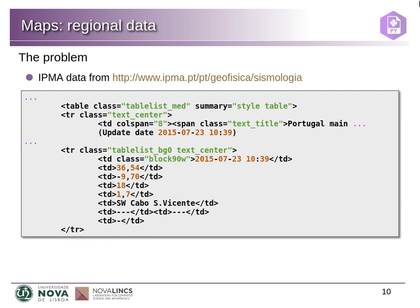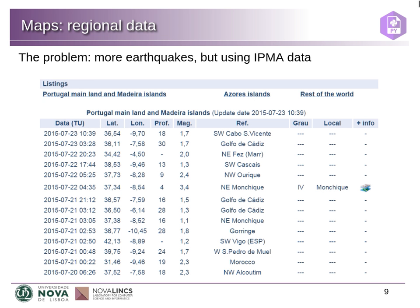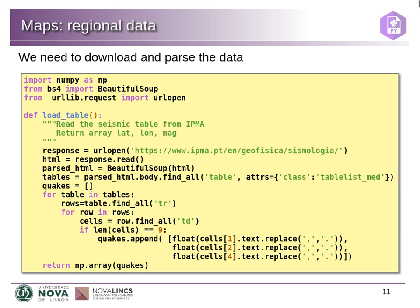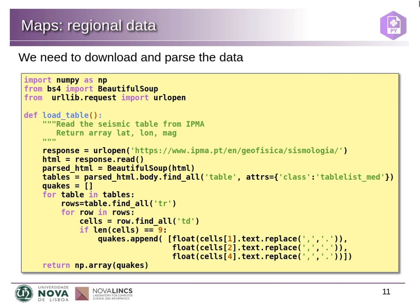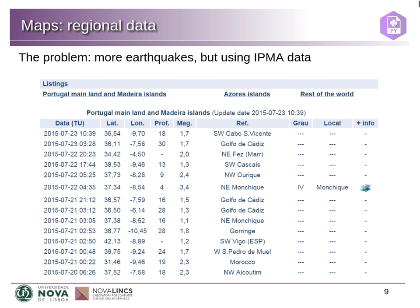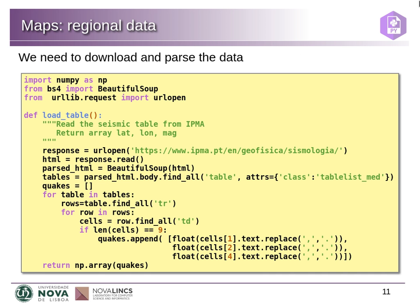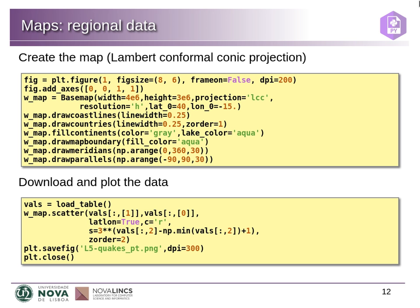We can parse the data from this site using BeautifulSoup. The page is updated regularly so we can download the data and look for the tables. We get the table with class name 'tableListMed' and for all rows and cells we extract latitude, longitude and depth. Since this is in Portuguese, there are commas instead of dots for the decimal point, so we replace them before converting to a number. We then create a map using the LCC (Lambert Conformal Conic) projection, which is useful for smaller regions rather than the whole world.